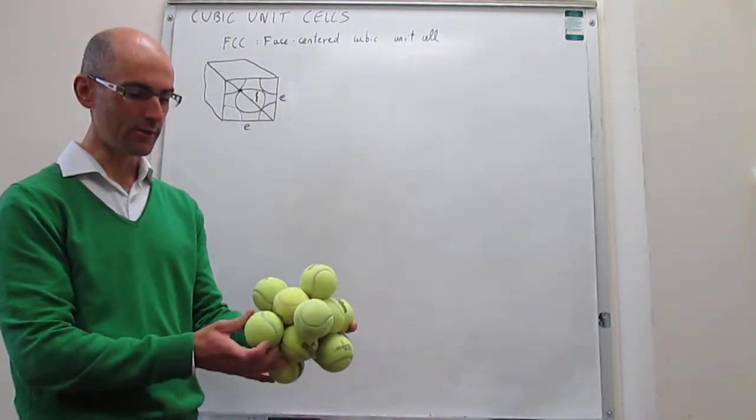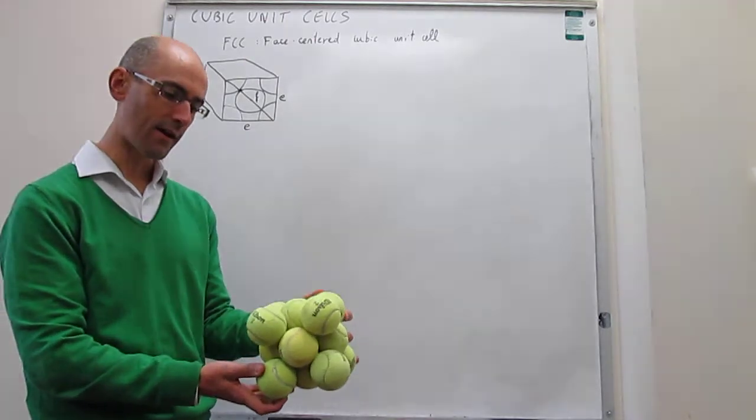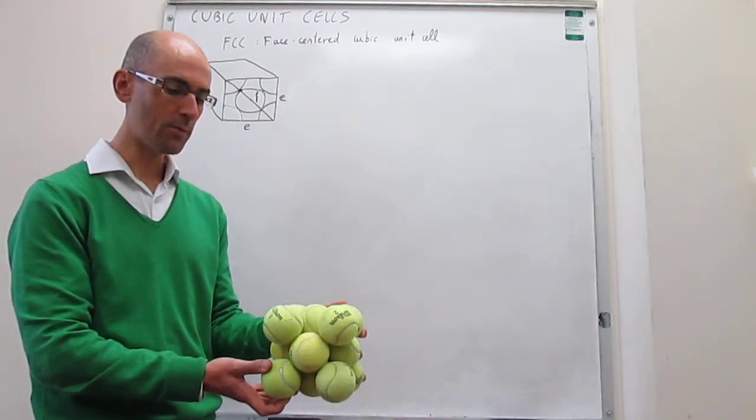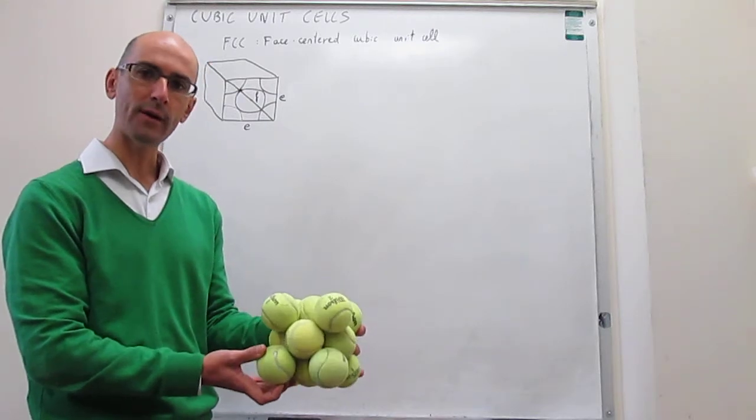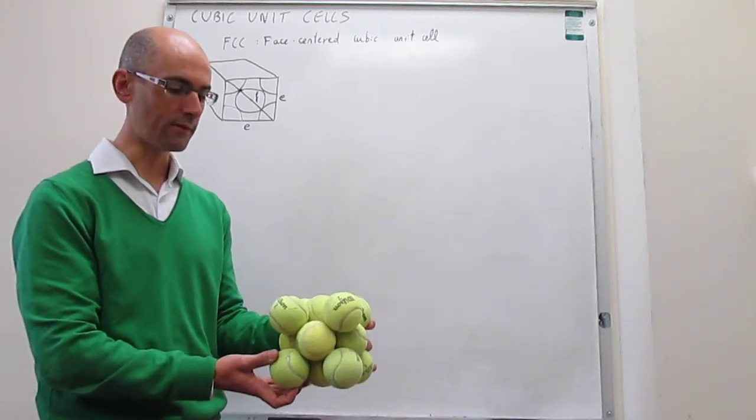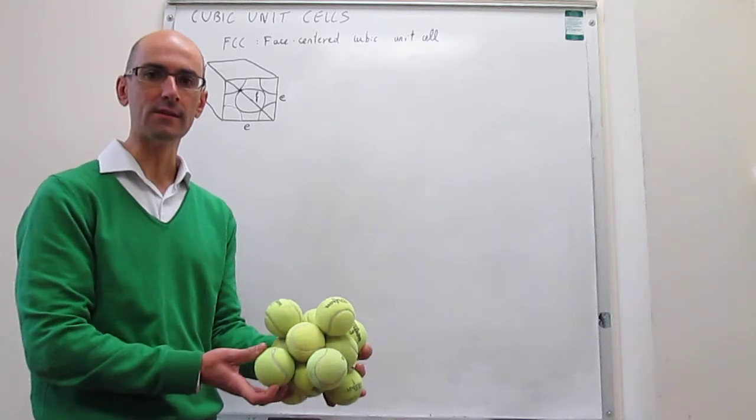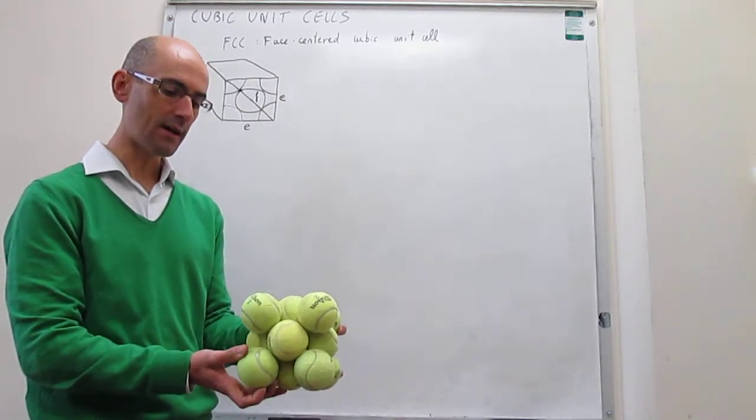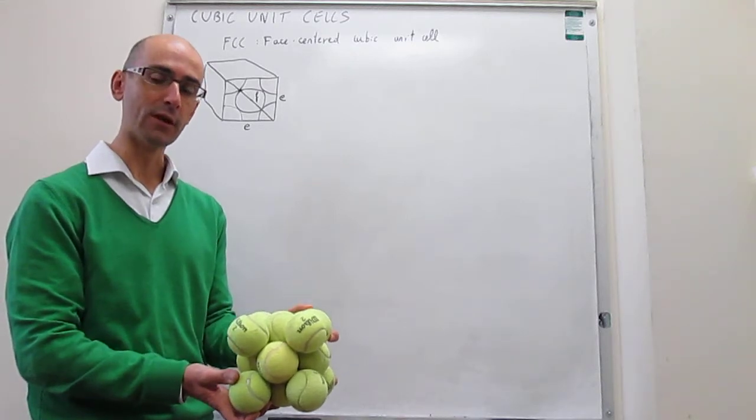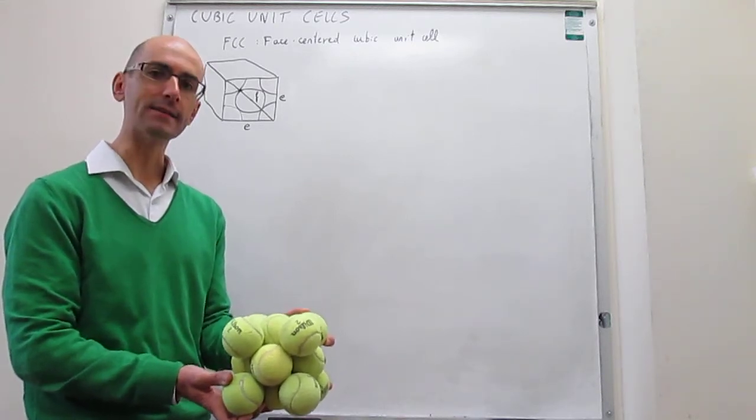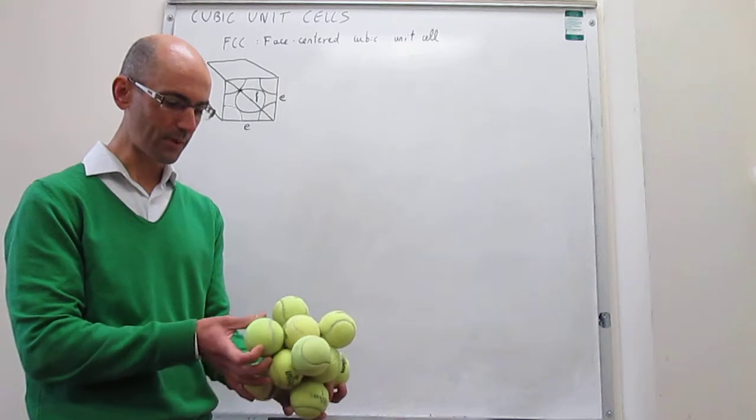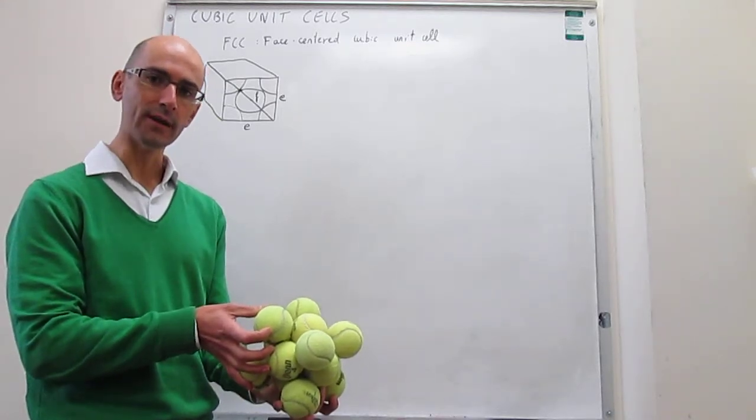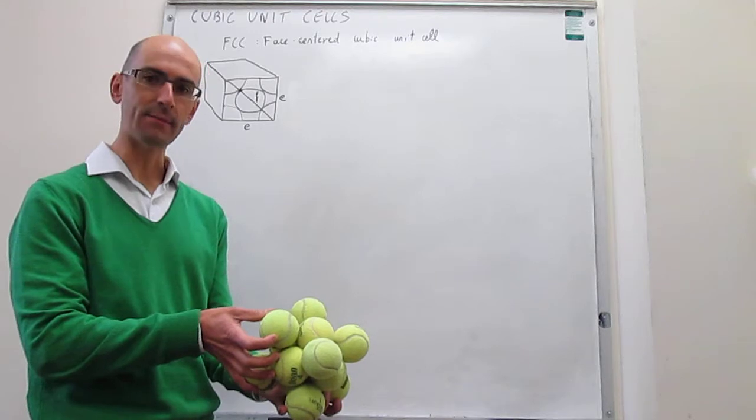It's a cubic unit cell in which you have an atom or a sphere in each corner of the cube, and then you have one sphere at the face of each one of the six faces of the cube. This unit cell represents one of the unit cells for the closest packed lattices that we have studied. It's actually the best way to pack spheres in space.